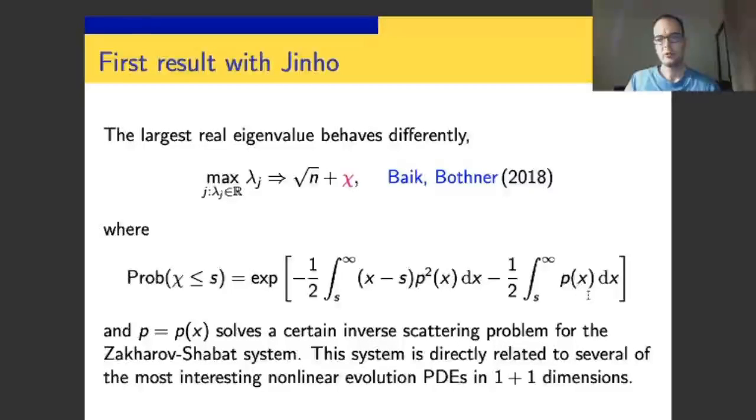The structure is important because if you're familiar with the work of Craig Tracy and Harold Widom on the Gaussian orthogonal ensemble, then you will realize that this formula is absolutely similar. The only difference to the Gaussian orthogonal ensemble, which is a Hermitian matrix model, is that function p is replaced by q, which is a Painlevé transcendent. Everything else is completely similar.